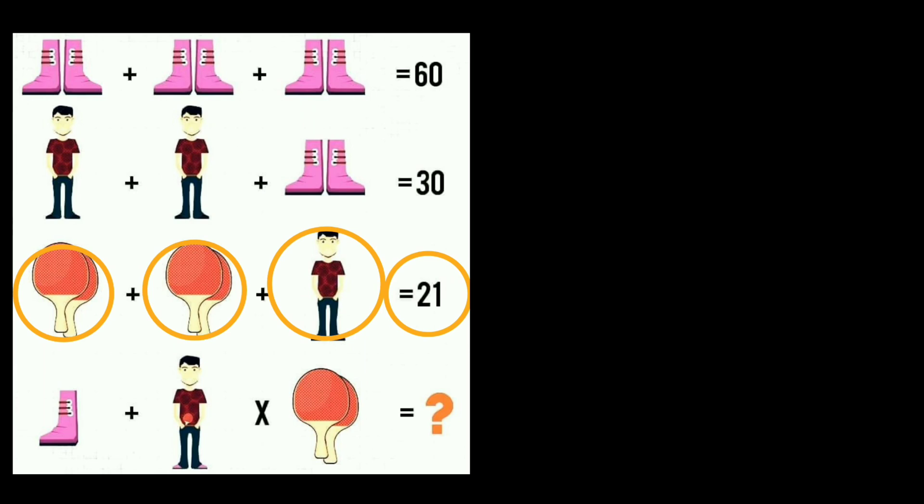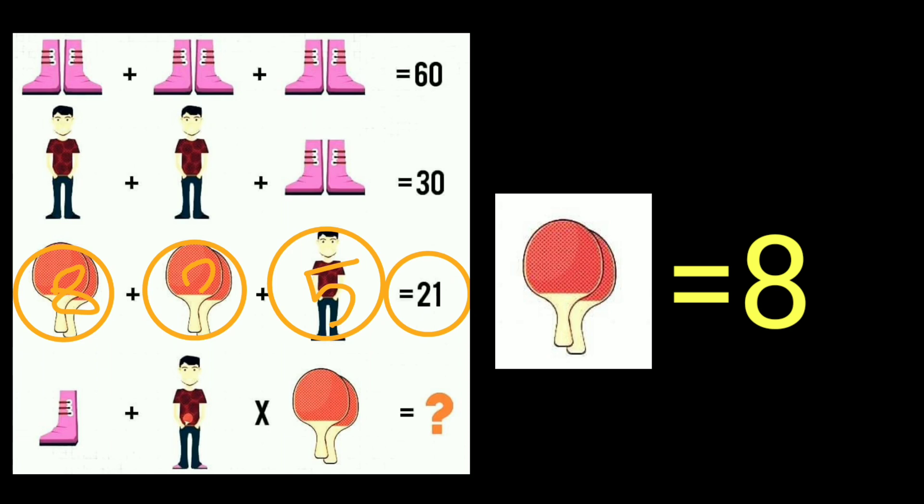As you know the value of the boy is equal to 5. So if we write 5 here, 21 minus 5 is 16. It means the pair of badminton is equal to 8. The value of badminton is equal to 8. 8 plus 8 plus 5 equals 21.